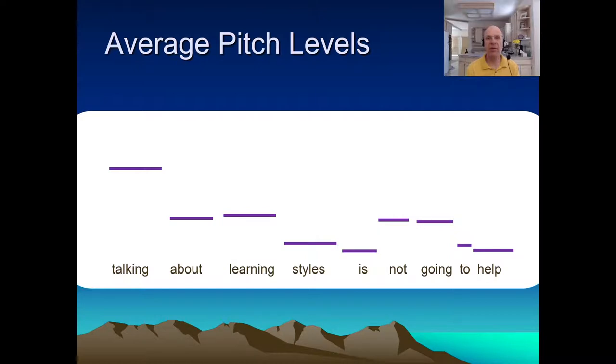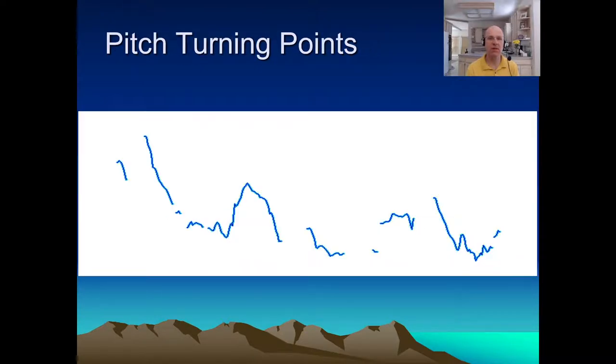Or maybe there's a different theory of what matters. Maybe not the average height per word, but the pitch turning points. So, from our original F0 contour, we could pick them out like this. Again, I did this by hand, but there are tools for this. And also tools with the ability to draw lines between these points as a way to obtain a stylized contour.